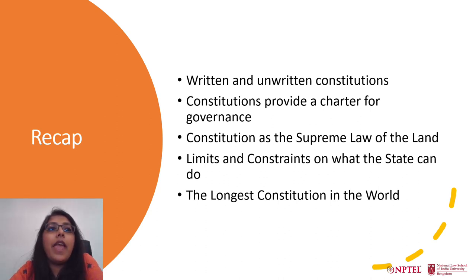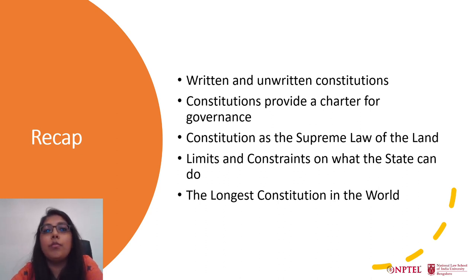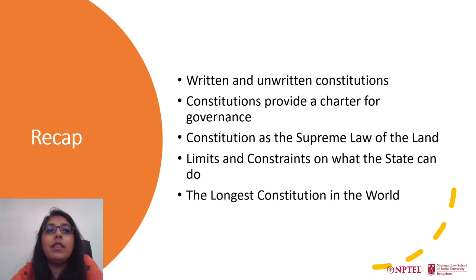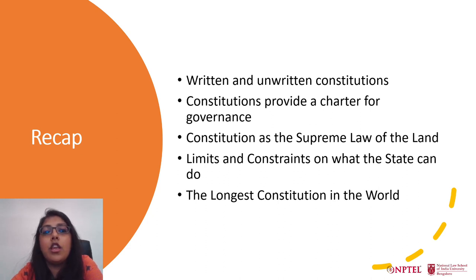If that is the case, then every state, every polity, will have a constitution. Imagine an absolute monarchy where all power — law-making power, the power to implement laws, to resolve disputes — is vested in one single individual, the monarch. In that situation, the constitution of that state might have a single rule: anything the king says is the law. But that one-line principle is the constitution of that state.